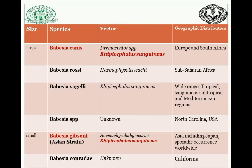Here is a table summarizing the species. Babesia canis, Babesia rosae, and Babesia vogeli come under the large type; Babesia canis is mainly transmitted by Dermacentor species and Rhipicephalus sanguineus; Babesia rosae by Haemaphysalis leachi; and Babesia vogeli by Rhipicephalus sanguineus. Babesia gibsoni and Babesia conradae are the two small category species. Babesia gibsoni, also known as the Asian strain, is mainly transmitted by Haemaphysalis leachi corneus and Rhipicephalus sanguineus. The vectors for Babesia conradae are not yet known.